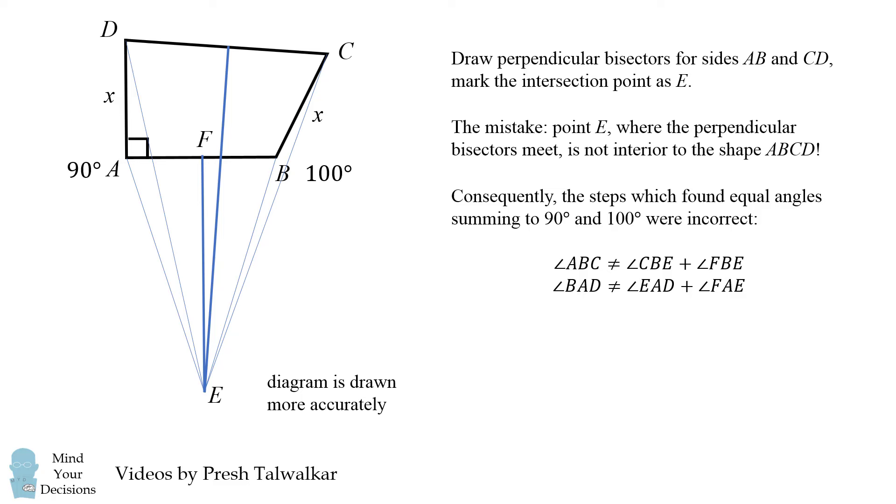Notice that ABC is not equal to CBE plus FBE and BAD is not equal to EAD plus FAE. So our steps do not prove that angles BAD and ABC are equal and therefore we cannot prove that 90 equals 100.